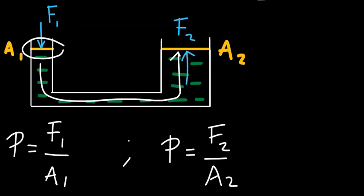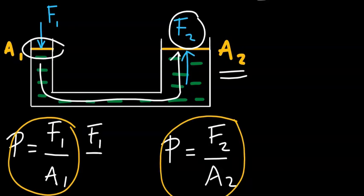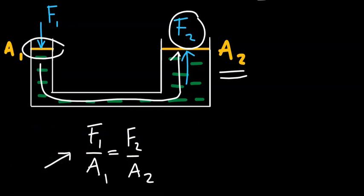There is a different force F2 now acting on the second piston in an upward direction, which is different from F1 because the surface area is A2, which is different from A1. Equating these two terms, we get: F1 over A1 equals F2 over A2. This equation is the result of the undiminished transmission of pressure from the left arm to the right arm.